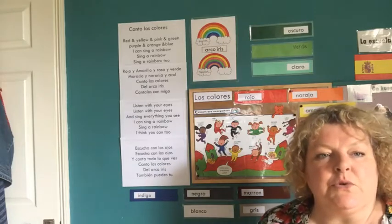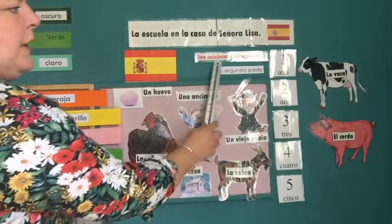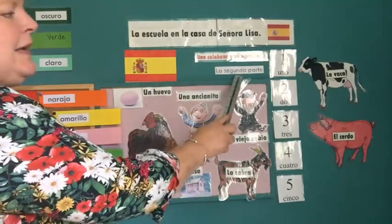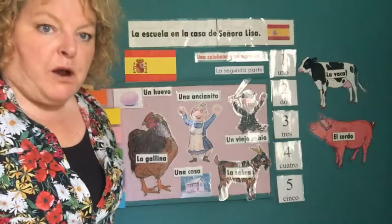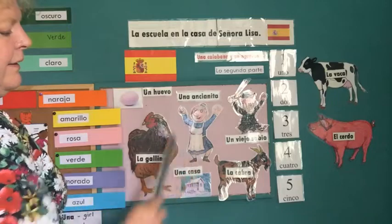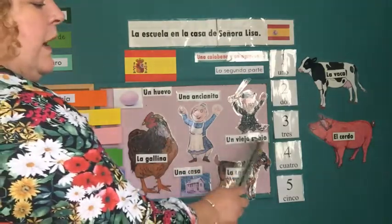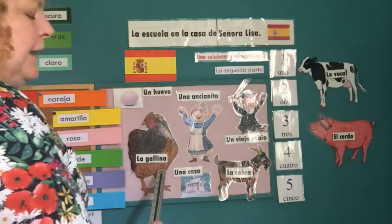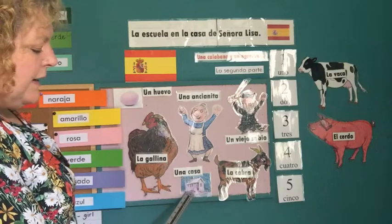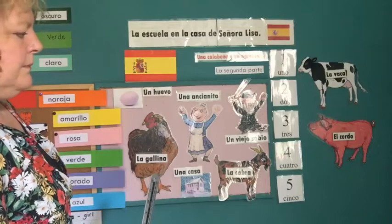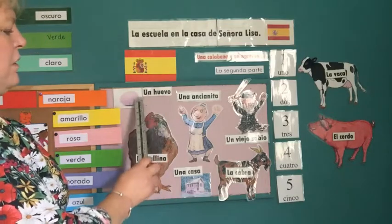We're going to move on to our story. Vale. Un calabaza y un pretón - a squash and a squeeze. La segunda parte - the second part. Remember we have una ancianita - little old lady. Un viejo sabio - a wise old man. La gallina - the chicken. Una casa - the house. And today we have la cabra - the goat. And un huevo - an egg.